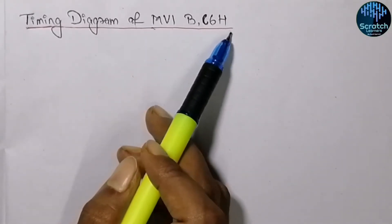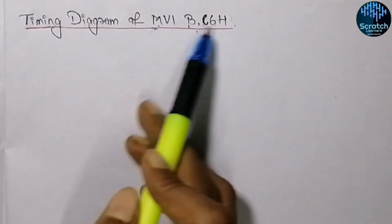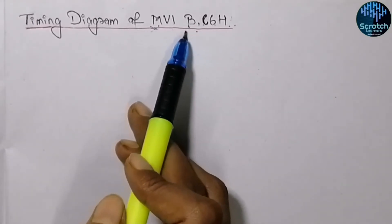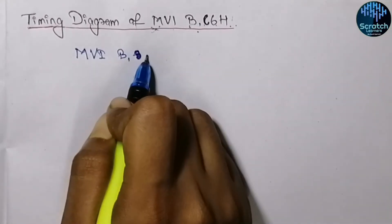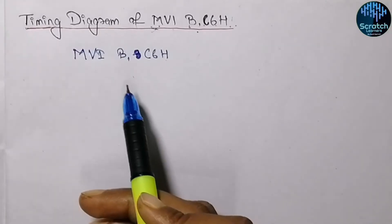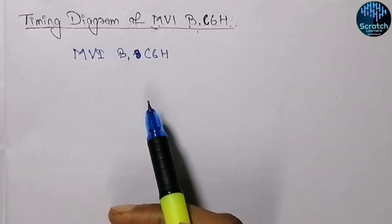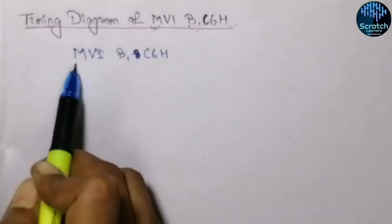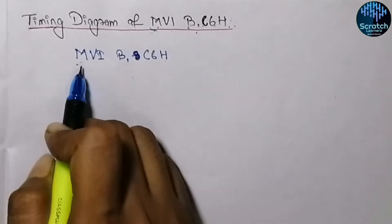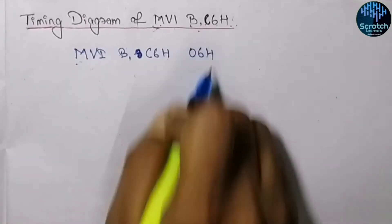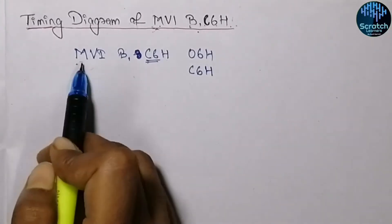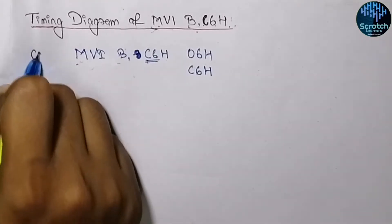Here we are taking the MVI B, C6H instruction. This instruction will move the data C6H into register B — that means register B will be loaded with C6H data. This MVI B, C6H instruction is a two-byte instruction. We have already discussed which instructions are one-byte, two-byte, and three-byte, so you can refer to that video via the i-button. The first byte is the opcode of the MVI B instruction, which is 06H, and the second byte is the data to be loaded, which is C6H.